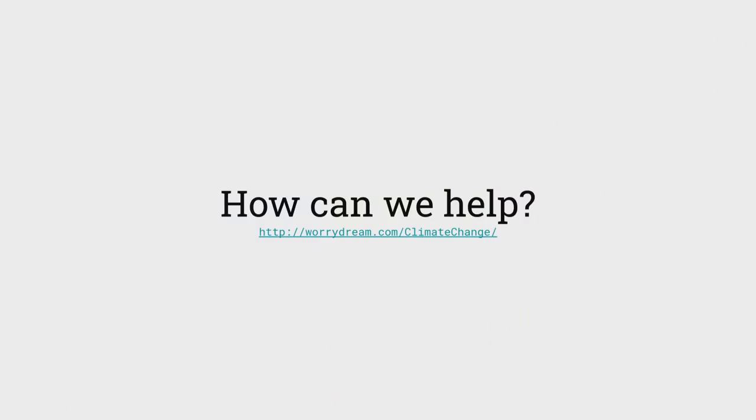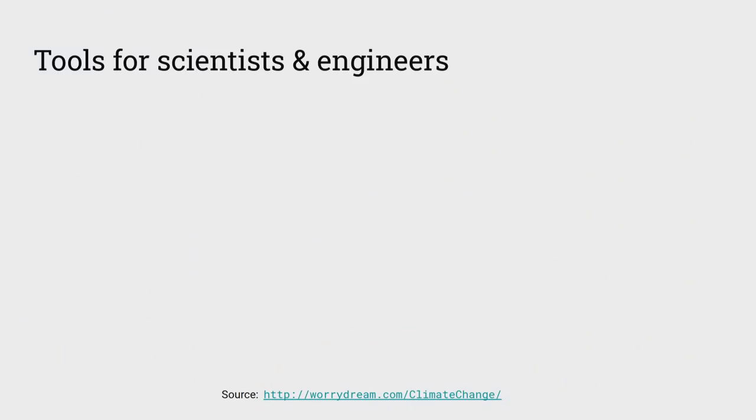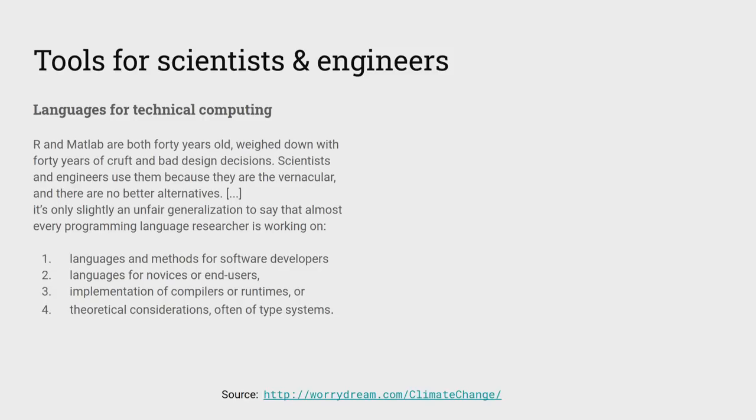One big question for me is: how can we as technologists help? Most of us in this room are fairly decent with computers, but how do we use that knowledge to actually impact real change? There's a fantastic article at worrytreme.com/climate-change that lists a lot of good ideas to think about — do my skills apply in that area? I'm a computer scientist doing programming language research, so how do my skills really apply to climate change? One realization is that the tools we have built for scientists and engineers are rather poor.